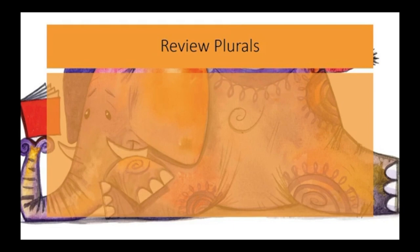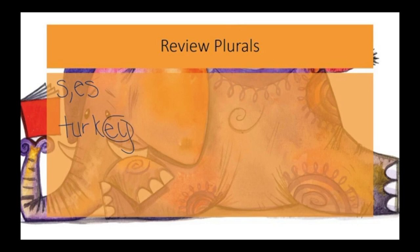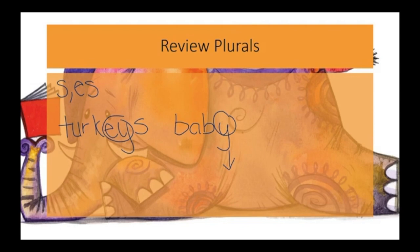When talking about plurals, we can add S or ES depending on the word. What's important is to talk about when we have a Y. In a word that has a Y that is part of a double vowel, like turkey, we do not change a letter — we just add an S to get turkeys. However, in a word that does not have the double vowel sound with a Y at the end, like baby, I'm going to change the Y into an I to make the word babies.